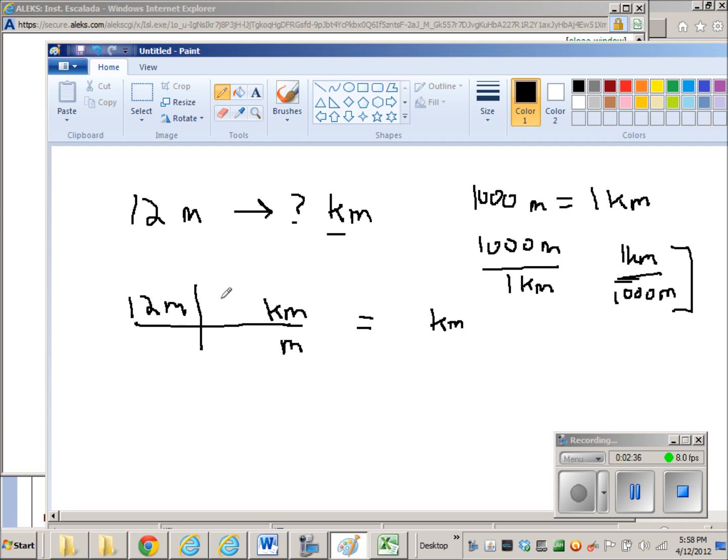So just copying that conversion factor, I end up having to divide 12 by 1,000. So the decimal point in 12 will move over 1, 2, 3 places. So I'll get 0.012 kilometers. So 12 meters is equal to 0.012 kilometers.